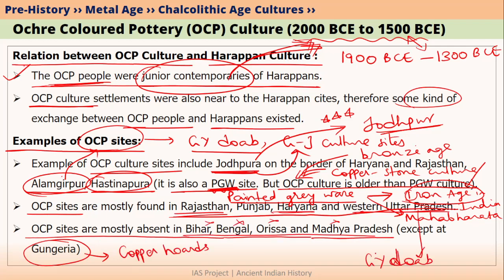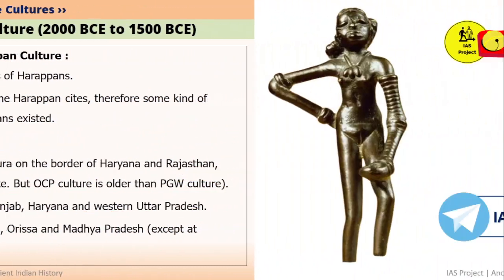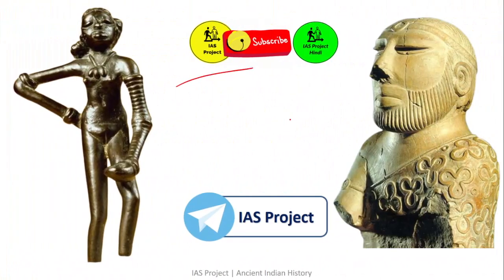This is about ochre-coloured pottery and this ends our Chalcolithic Age lectures. In the next lecture, we will start with Aryan culture. If you like this video, please subscribe. You can download this presentation from our Telegram channel — the name of the channel is IAS Project. You can find the link in the description section below. Thank you.